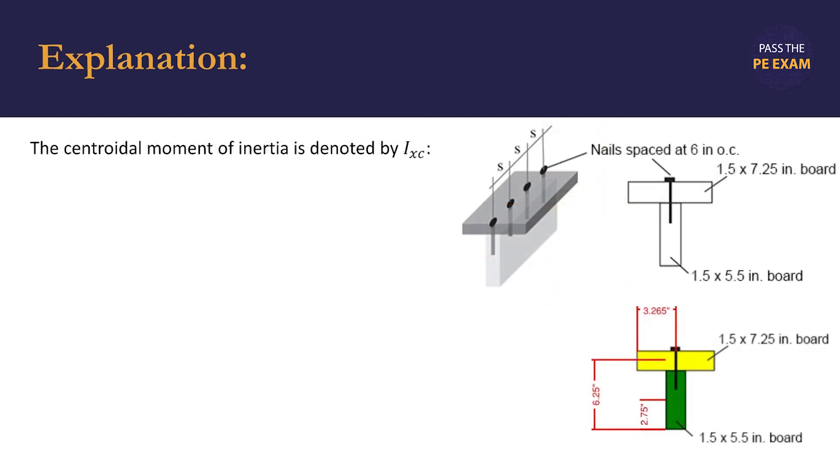From there, we need to calculate the centroidal moment of inertia, which is denoted by capital I-sub-xc. This equation is given in the PE handbook. We're finding the sum of the two sections where b is the base width of the section, h is the height of the section, and d is the distance between the y-coordinate of the centroid that we just calculated and the center of the individual section.